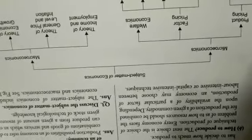How to produce? Second point, how to produce? The next choice is the choice of technique of production. Every economy faces the problem as to how resources should be combined for production of a given economy. Depending upon the availability of a particular factor of production, economy may choose between labor-intensive or capital-intensive technique.